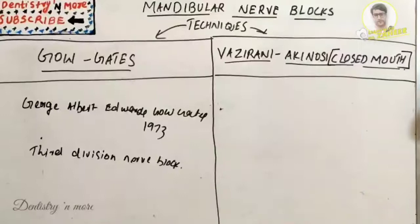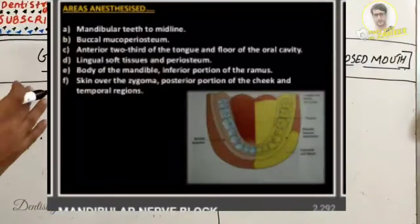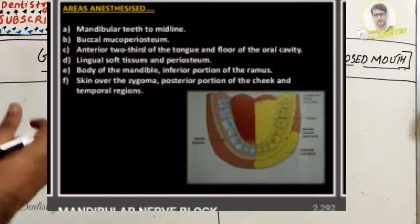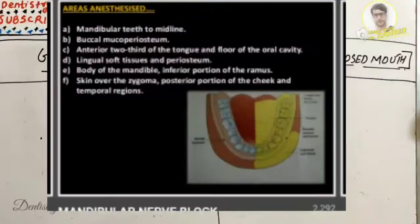The areas anesthetized by Go-Gates technique include mandibular teeth to the midline, buccal mucoperiosteum, anterior to the tongue and floor of the oral cavity, lingual soft tissues and periosteum, body of the mandible, inferior portion of the ramus, skin of the zygoma, posterior portion of the cheek, and the temporal region.